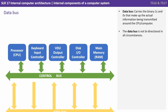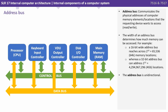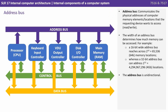The data bus carries the binary ones and zeros that make up the actual information being transmitted around the CPU and computer. The data bus is not bi-directional in all circumstances. The address bus communicates the physical addresses of computer memory elements or locations that the requesting device wants to access — in other words, read and write. The width of an address bus determines how much memory can be accessed. For example, a 16-bit wide address bus reaches 2 to the power of 16 locations — that's 65,000 or 64K worth of memory locations — whereas a 32-bit address bus can address 2 to the power of 32 locations, that's roughly 4 billion or 4 gigabytes worth. The address bus is unidirectional.